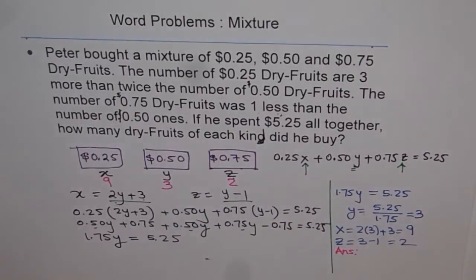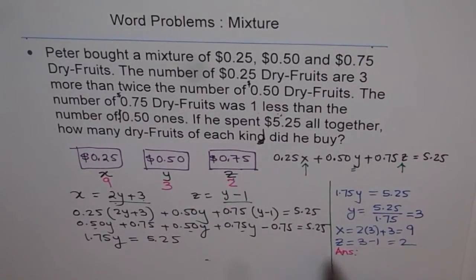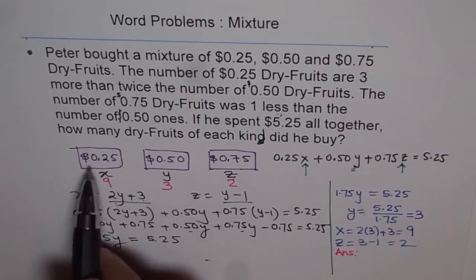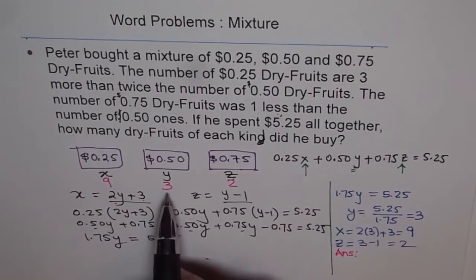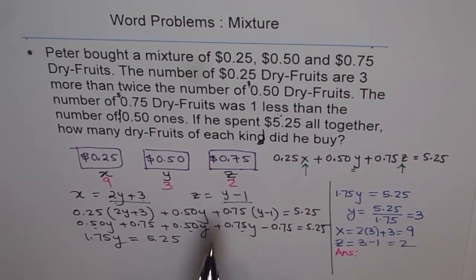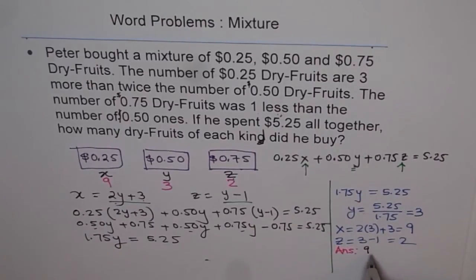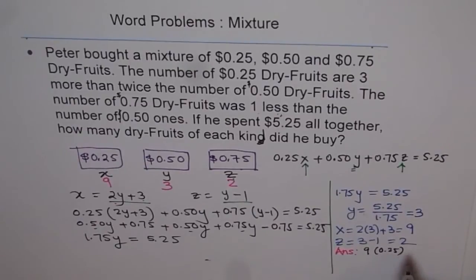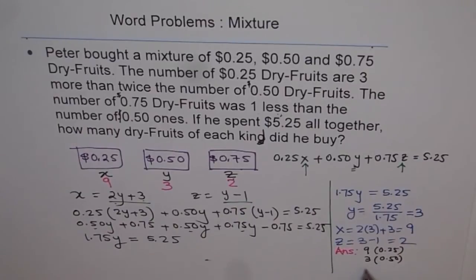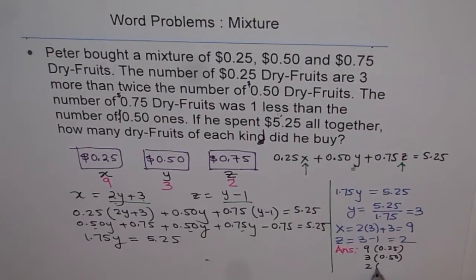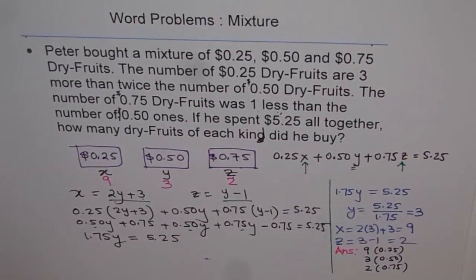So the answer is: for the $0.25 packets, Peter bought 9. For the $0.50 packets, Peter bought 3. And for the $0.75 packets, Peter bought 2. So the answer is 9 for $0.25, 3 for $0.50, and 2 for $0.75.